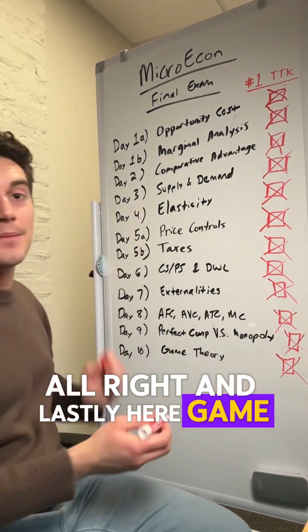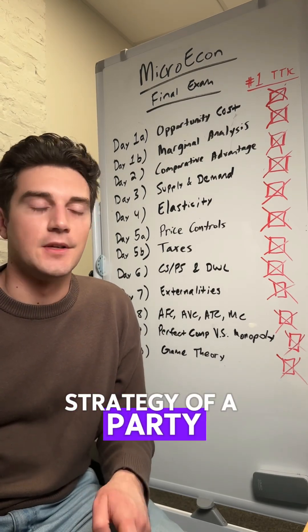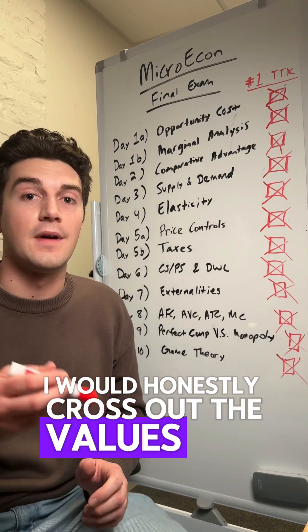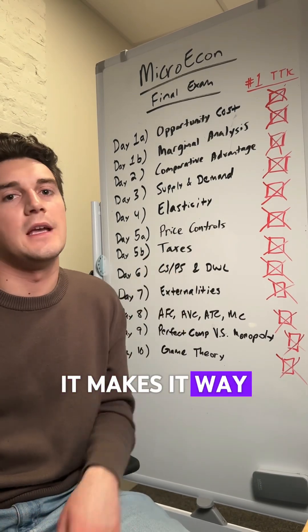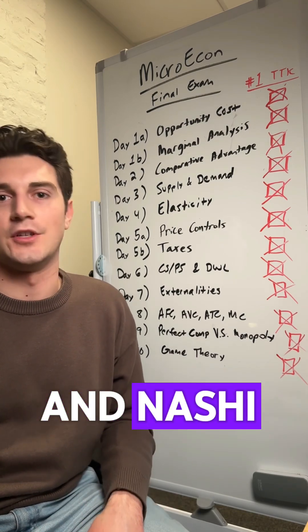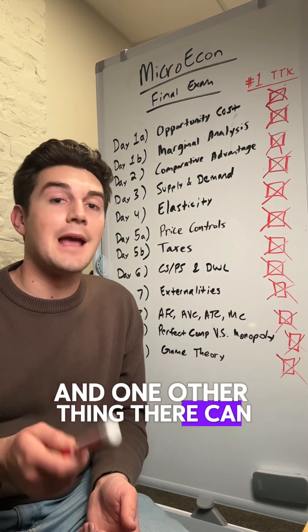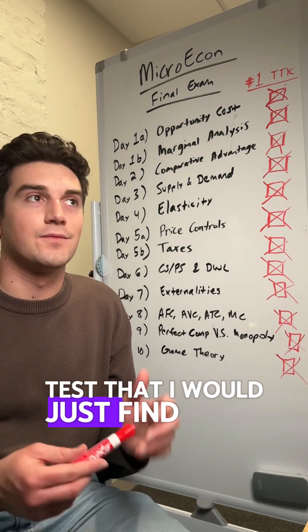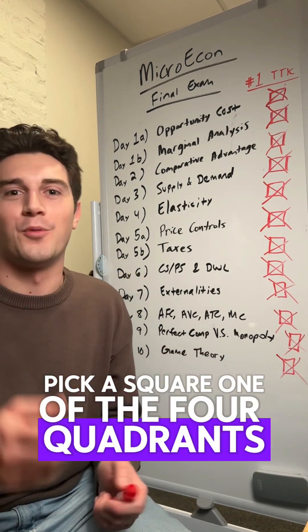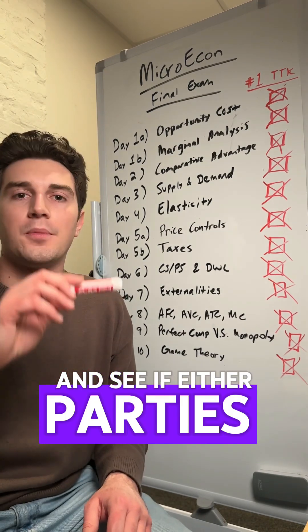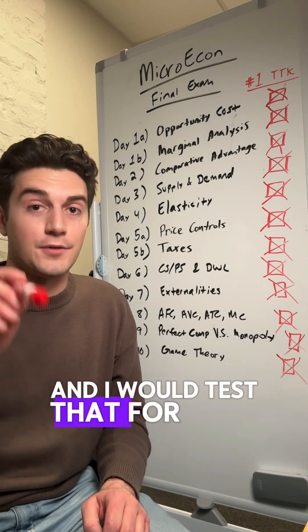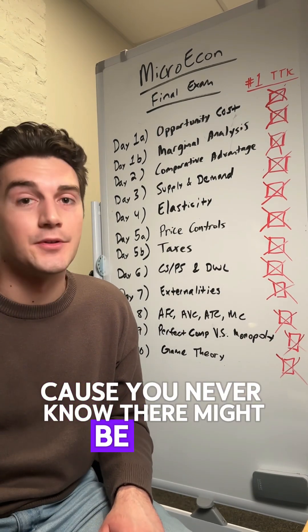Game theory. When you're trying to find the dominant strategy of a party, just zone in on that one party — I would honestly cross out the values for the other party. It makes it way easier to see if there's a dominant strategy. That goes into the whole prisoner's dilemma and Nash equilibrium. Also, there can be two Nash equilibriums. To test that, pick a cell or one of the four quadrants and see if either party is incentivized to move. Block out the other party's values and test that for each of the four quadrants, because there might be two equilibriums.